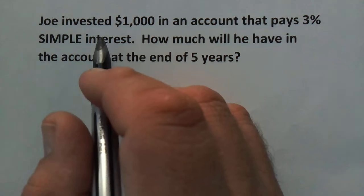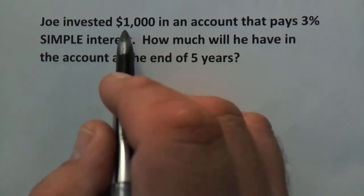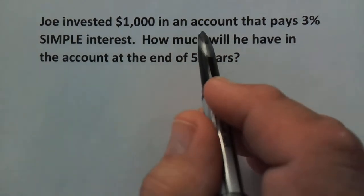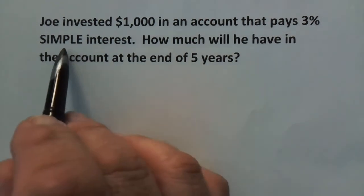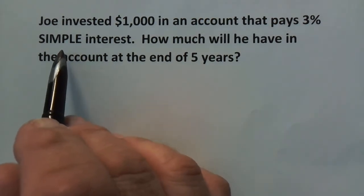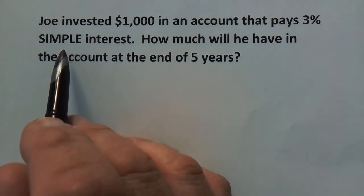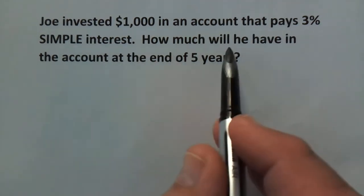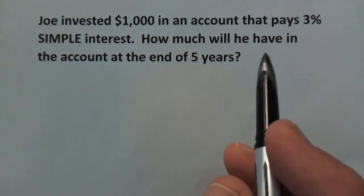All right, in this word problem Joe invested $1,000 in an account that pays 3% simple interest. This is as opposed to compound interest where it keeps compounding. This is just simple interest. How much will he have in the account at the end of five years?